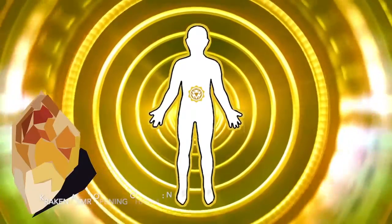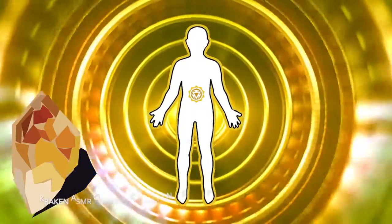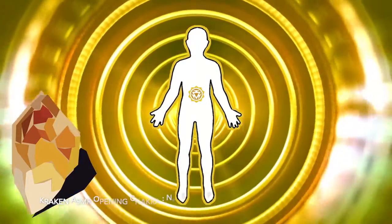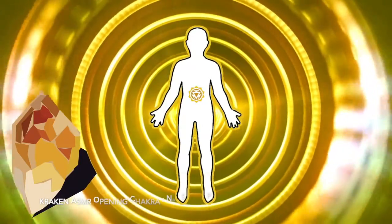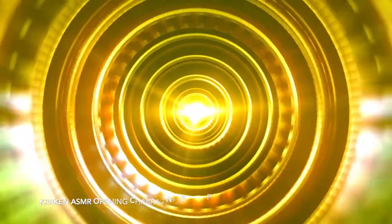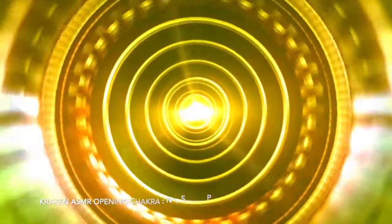If you have a citrine crystal or another crystal associated with the Solar Plexus Chakra, hold it or keep it close during this meditation. This meditation will help you open and balance your Solar Plexus Chakra. Find a comfortable position and close your eyes.